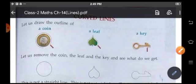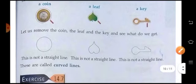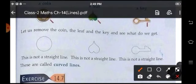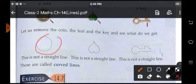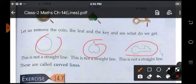So if we remove the coin, leaf and key, what do we get? We get a circle over here. We got more or less a triangle shape over here and we got another shape over here. But these are not the straight lines. So they are known as curved lines.